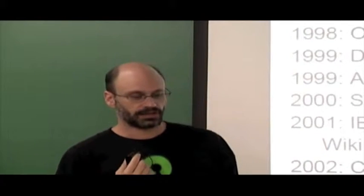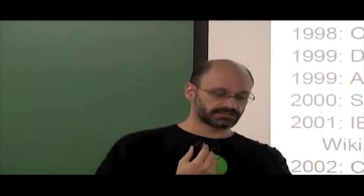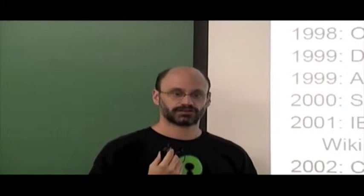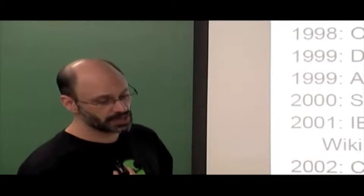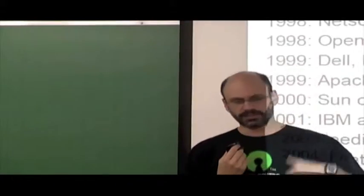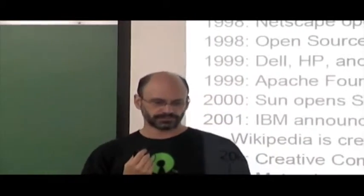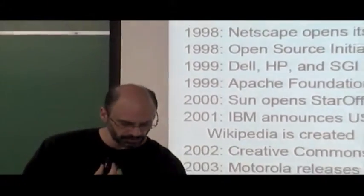In 1999, the Apache Foundation was formed. The following year, Sun opened StarOffice, creating the OpenOffice suite. Shortly after, IBM announced an investment of $1 billion in the Linux operating system, the same year that Wikipedia was created. The movement continued with a lot of momentum and attention.